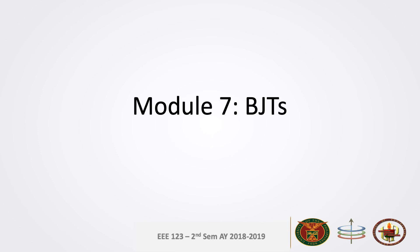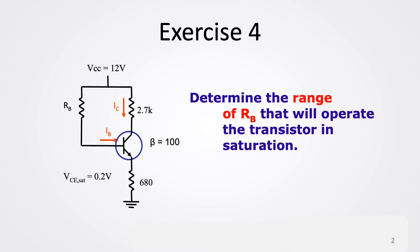Hello everyone, I hope everyone is doing well. Since we are not going to meet this week, I prepared recorded lectures to advance the class. For today, we are going to finish up on module 7, which is on BJTs. Last time we already discussed three examples of analyzing BJT circuits, and for this material I'm going to discuss the last exercise. We are given a BJT circuit and asked to determine the range of resistor RB that will operate the transistor in saturation.